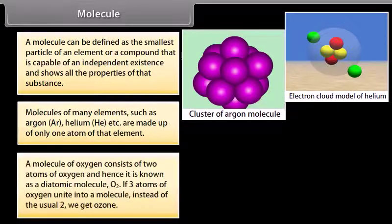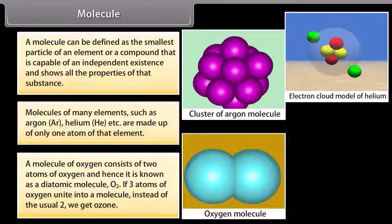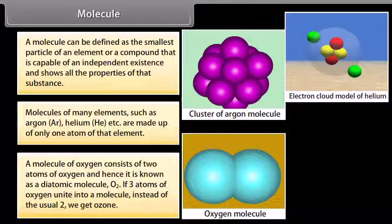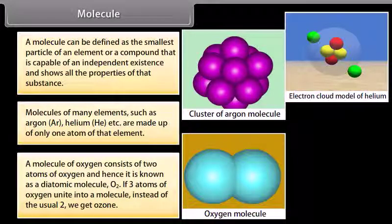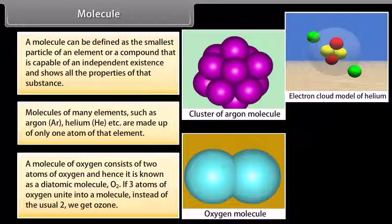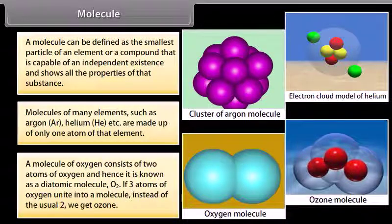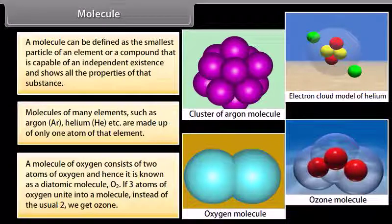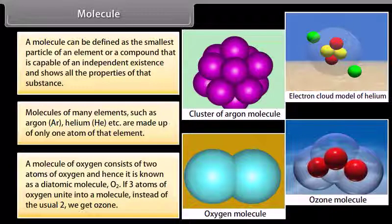A molecule of oxygen consists of two atoms of oxygen and hence it is known as a diatomic molecule, O2. If three atoms of oxygen unite into a molecule instead of the usual two, we get Ozone.